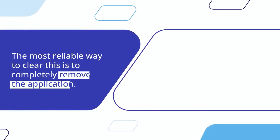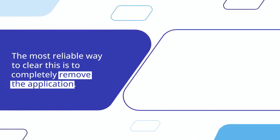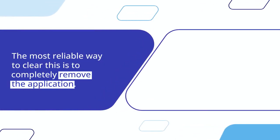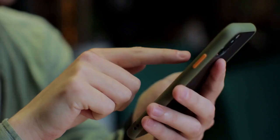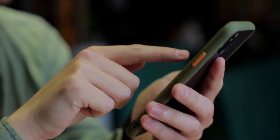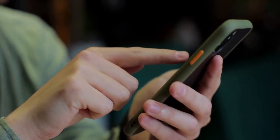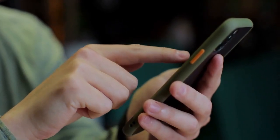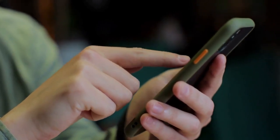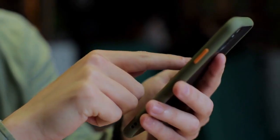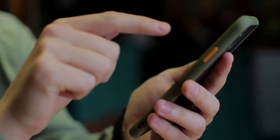The most reliable way to clear this is to completely remove the application. This action deletes all its stored data and makes your device forget the banned account's login details.